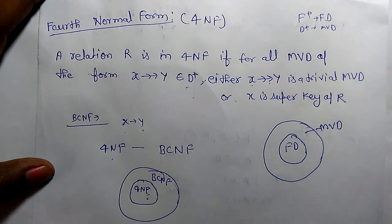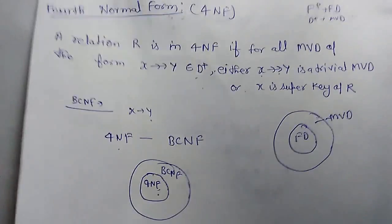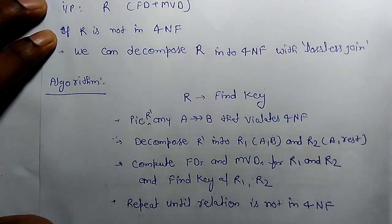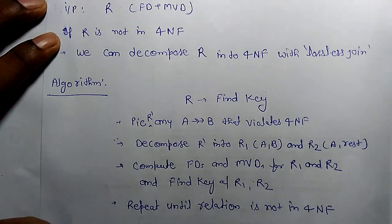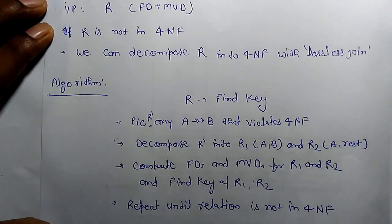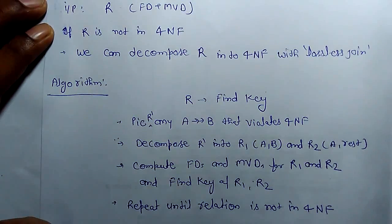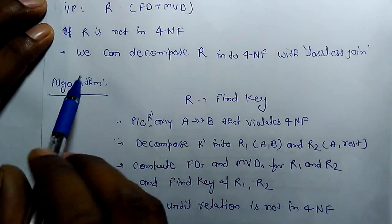Now we can see how we can make a relation which is not in 4NF into 4NF. If there is a relation, it has some functional dependency or multivalue dependency and R is not in 4NF, we can decompose a relation into 4NF with lossless join.